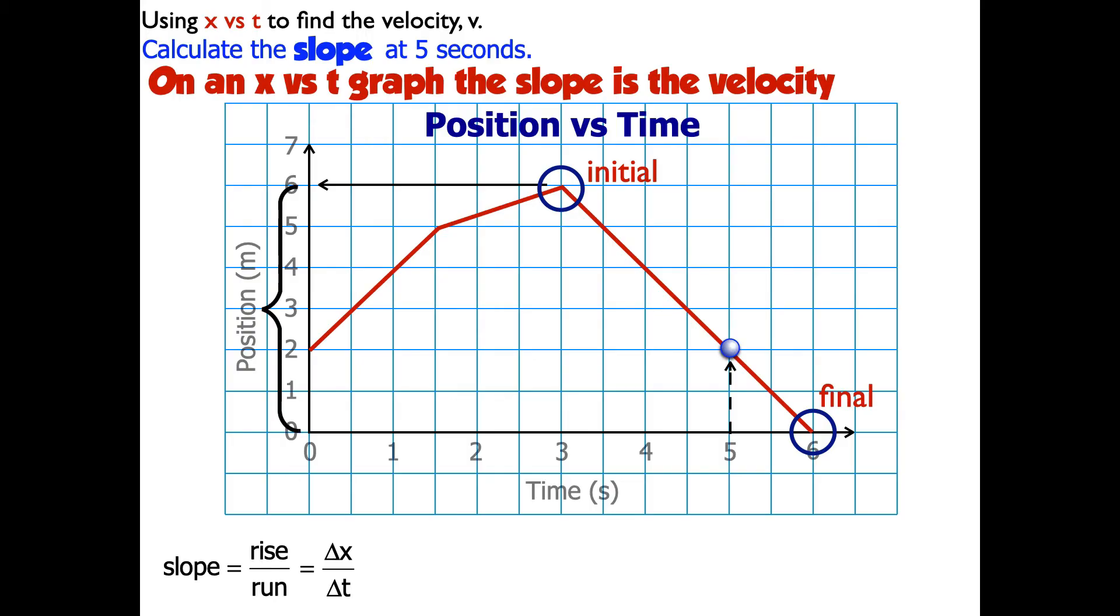So the displacement is the difference between these two positions. That's going to be the final minus initial, which is 0 minus 6. So that's negative 6 meters.